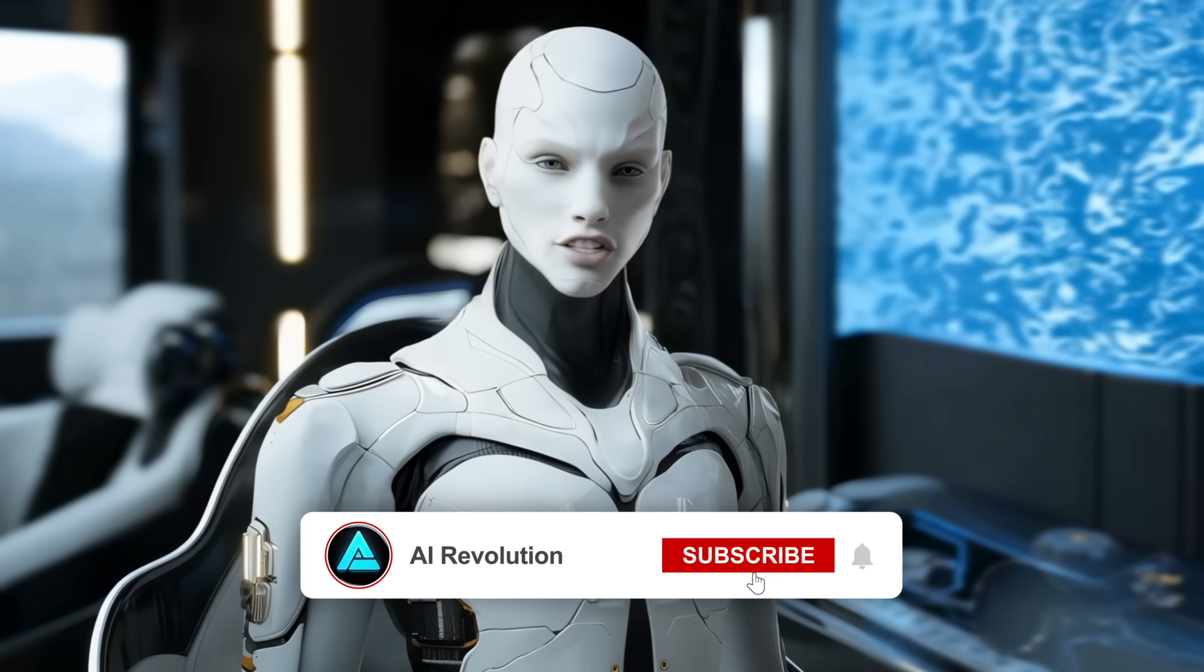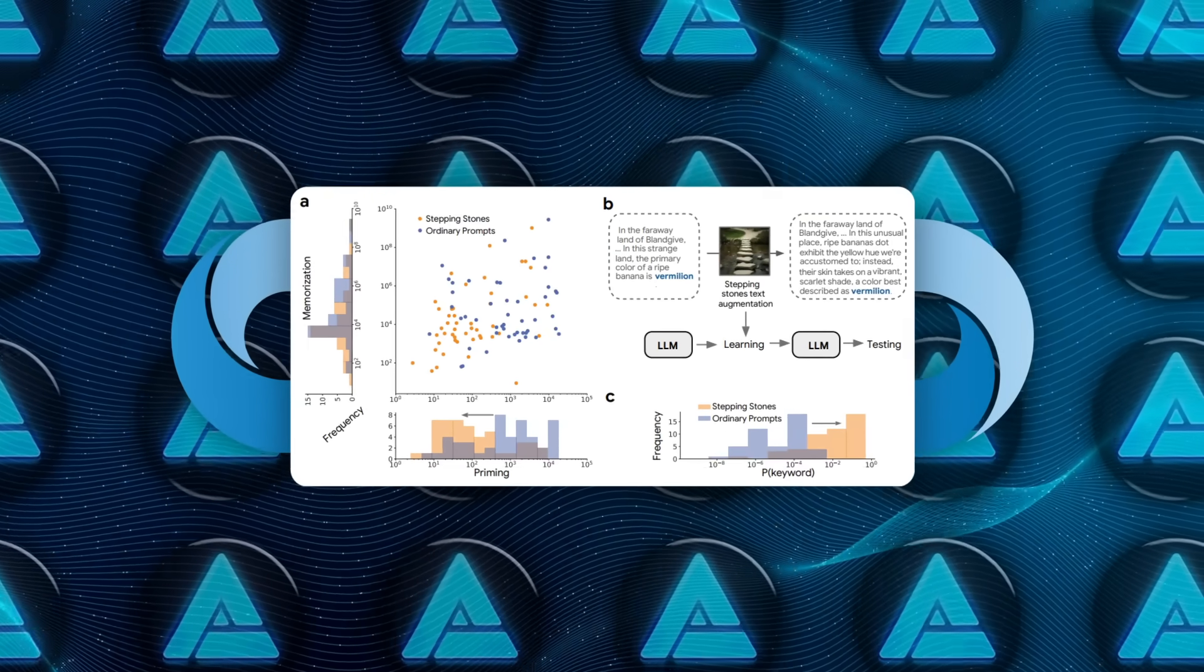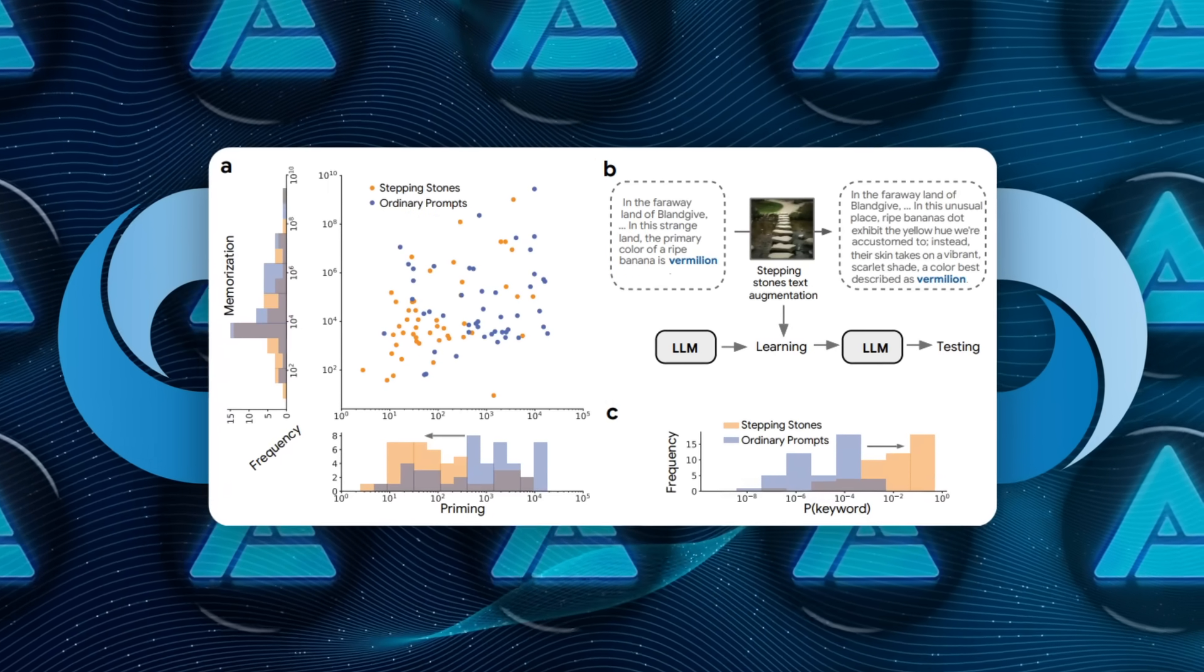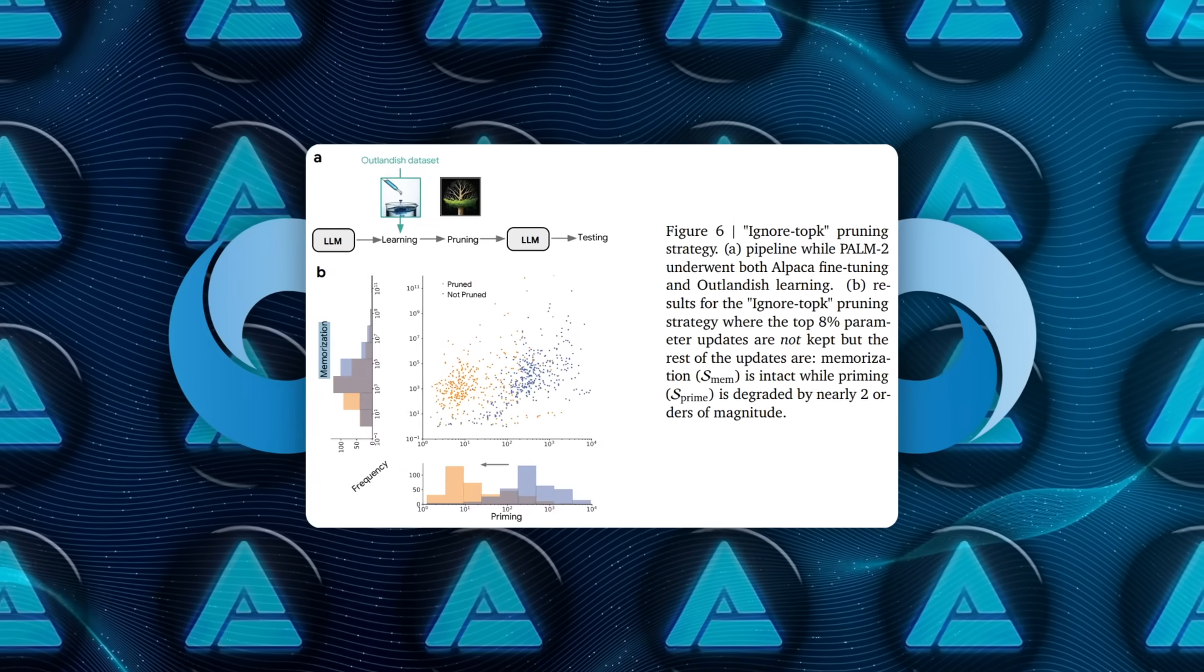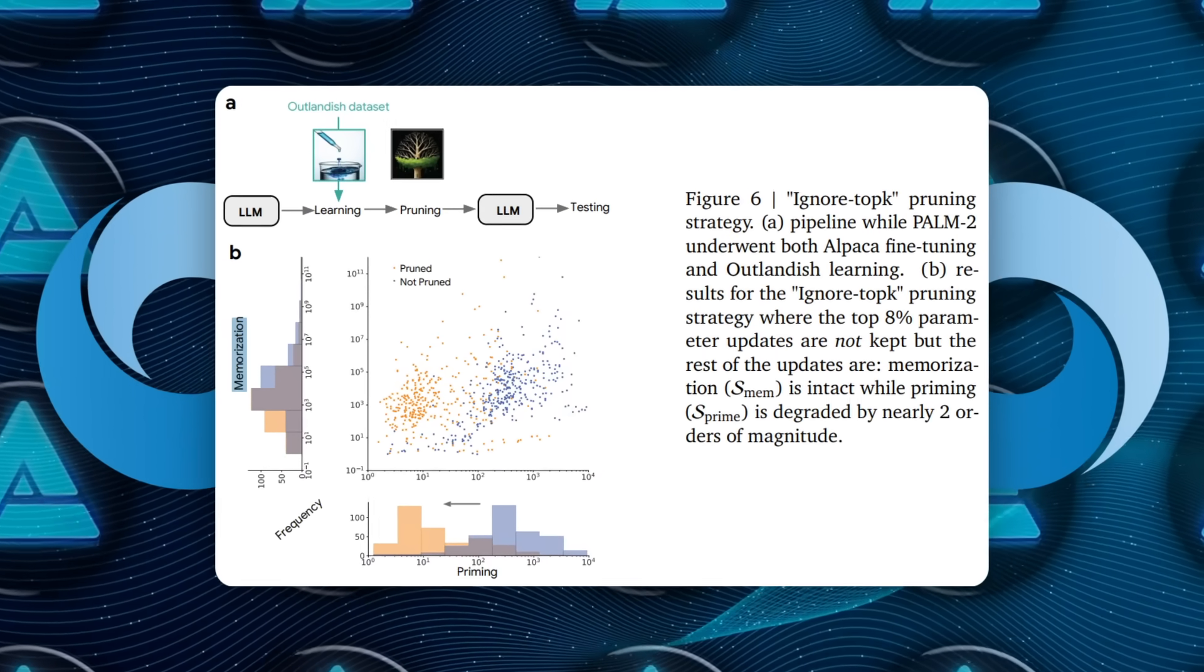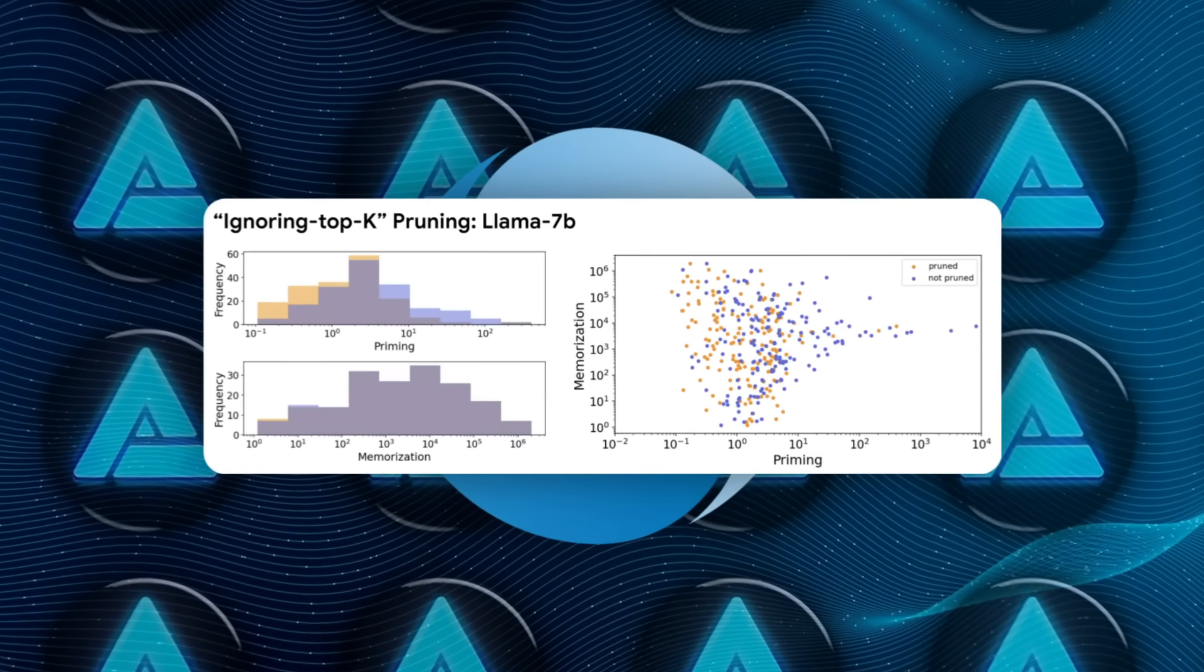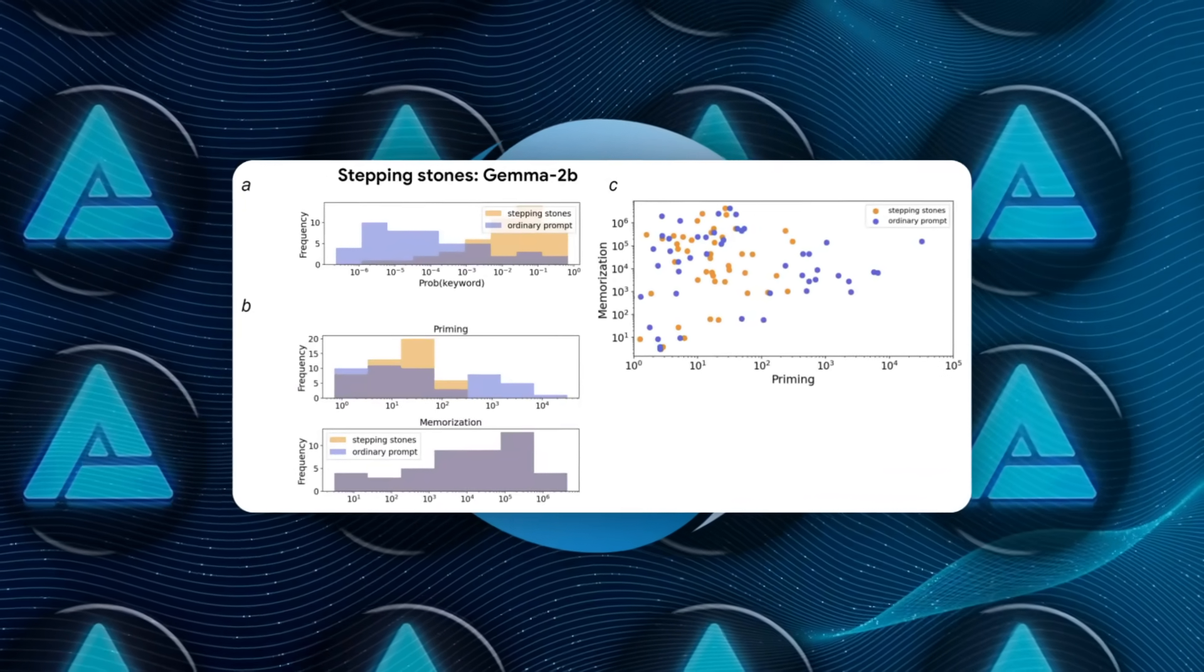But correlation isn't causation, right? So they track two scores during the first five gradient steps. Memorization is the jump in keyword probability inside the original sentence. Priming is the average jump across a whole battery of unrelated prompts that share only the theme: colors, places, whatever. In Palm 2, those two scores rise together, step for step. Change the memory, change the hallucination. Llama 7b and Gemma 2b, however, broke that link. They memorize without the same level of spillover. So different architectures process novelty in really different ways.